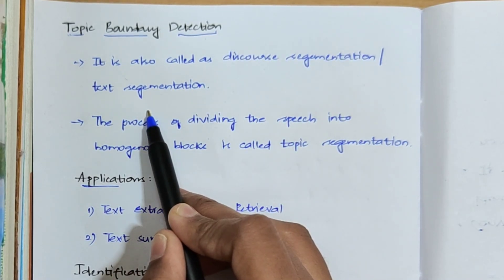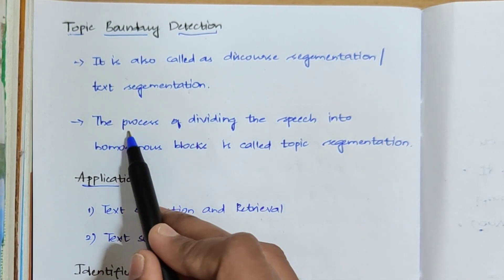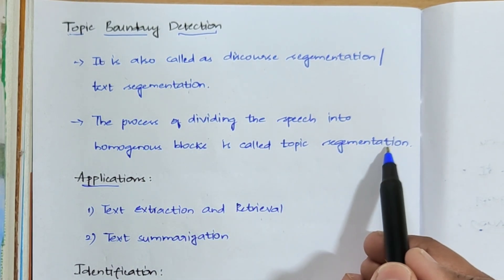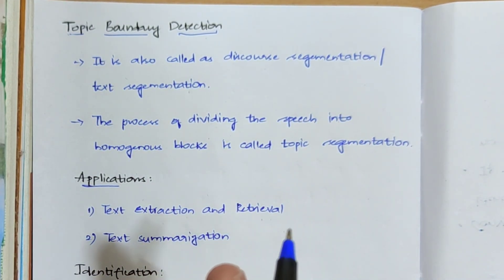What is text segmentation? The process of dividing the speech into homogeneous blocks is called topic segmentation. For example, you have a long text where there are no paragraphs. Your task is to find out the paragraphs - you have to divide that huge text into paragraphs.